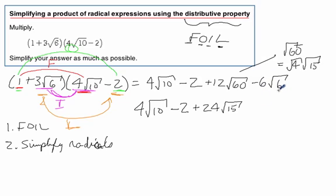And then we check, does 6 simplify? Does radical 6 simplify? No, it does not. So we subtract. So that's minus 6 radical 6. And then the third step is to combine any like terms.